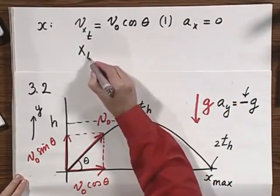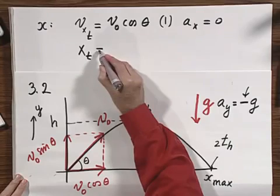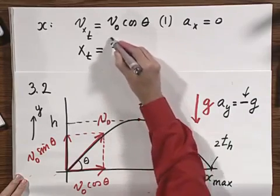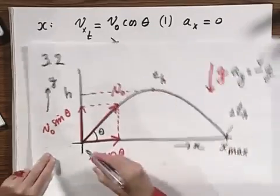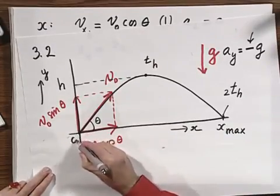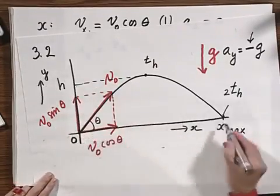The position in the x direction, at any moment in time, equals x zero, which I will conveniently choose zero, so I choose this origin here zero, both for y and for x,